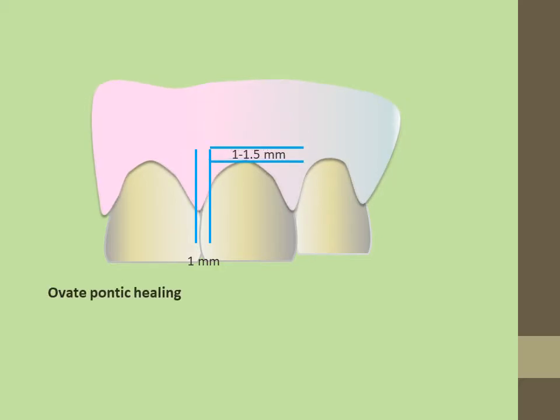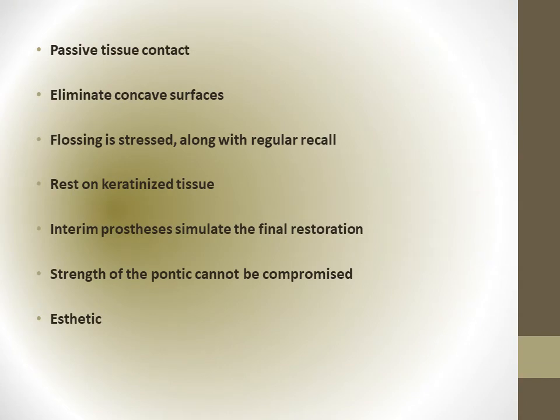During successive follow-up appointments, the coronal segment of the Pontix is reduced to facilitate flossing. The tissue surface of the Pontix should rest passively without blanching on keratinized tissue. Regular flossing under the Pontix is essential for the tissue to remain in a healthy state.